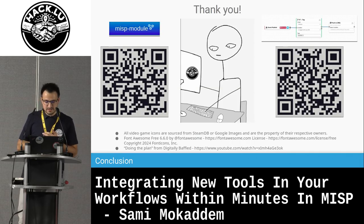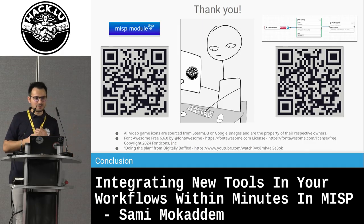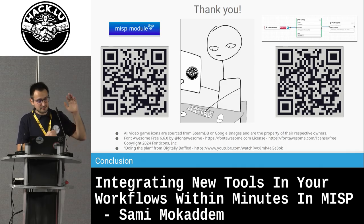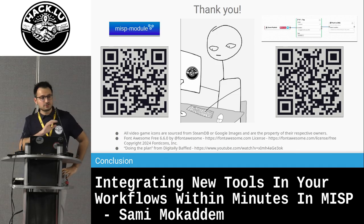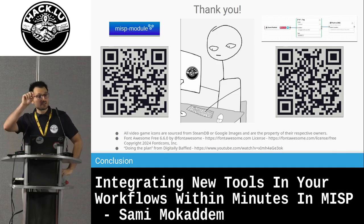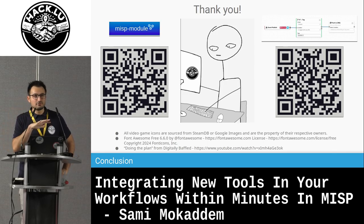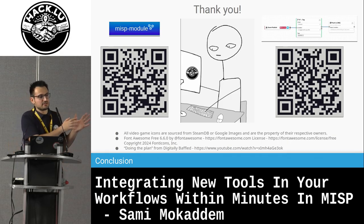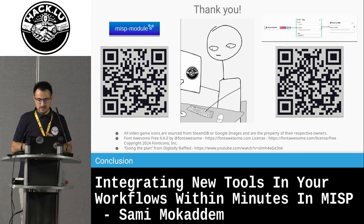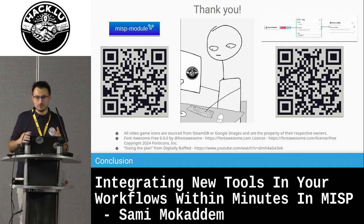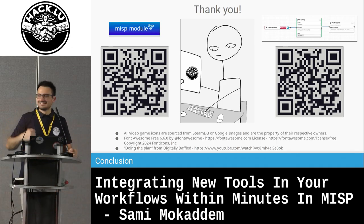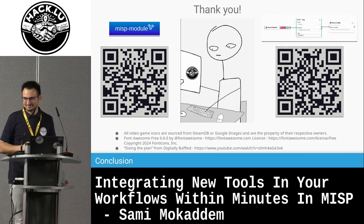Now you have the knowledge on how to contribute to the MISP project. If you want to write new MISP modules, it's quite easy — access the repository using that QR code. If you design crazy workflows, you can create a blueprint and share it with the community. We have a repository called MISP workflow blueprints with around 15 workflows, essentially for curation pipelines to remove false positives from your data. That's it for me — thank you very much.